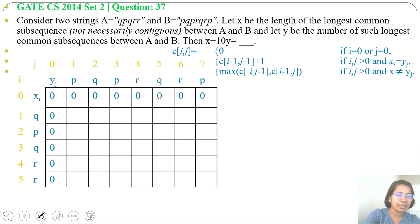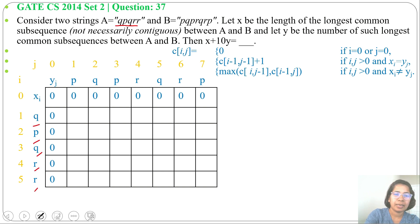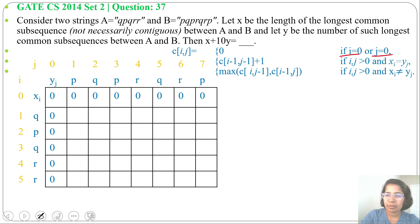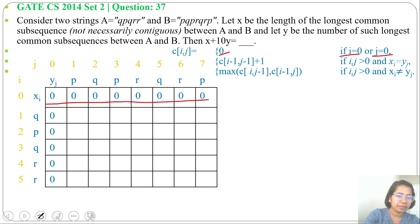i is on the left side, j is at the top. We will write X[i] on the left side and Y[j] at the top. So X[i] will be Q, P, Q, R, R and Y[j] is P, Q, P, R, Q, R, P. If i or j equals 0, it will be 0. So the first row and first column are all 0.